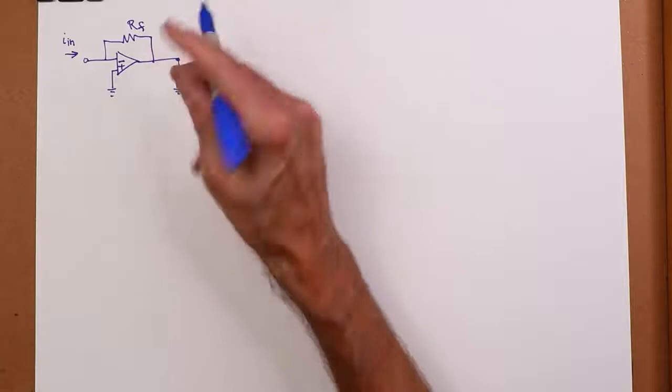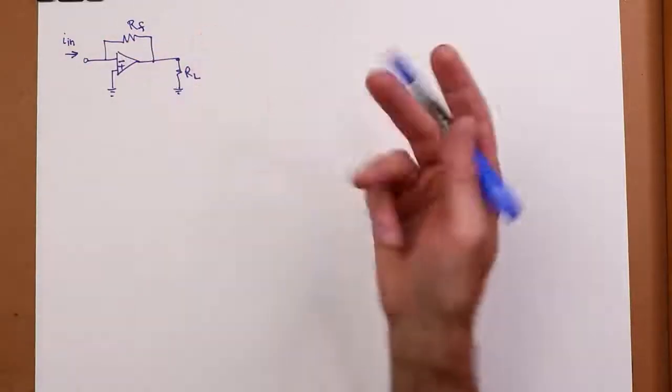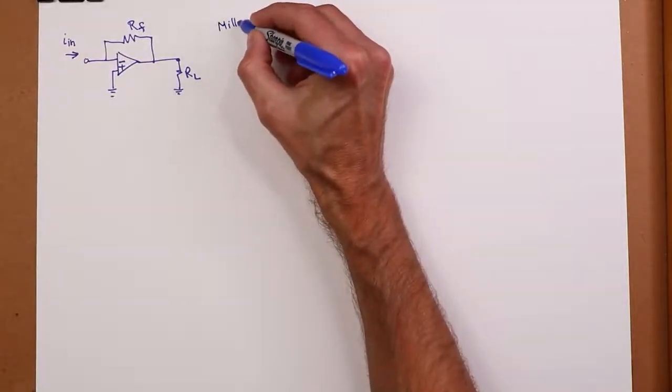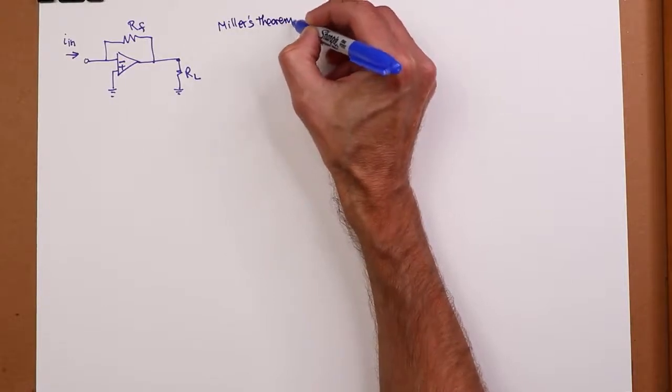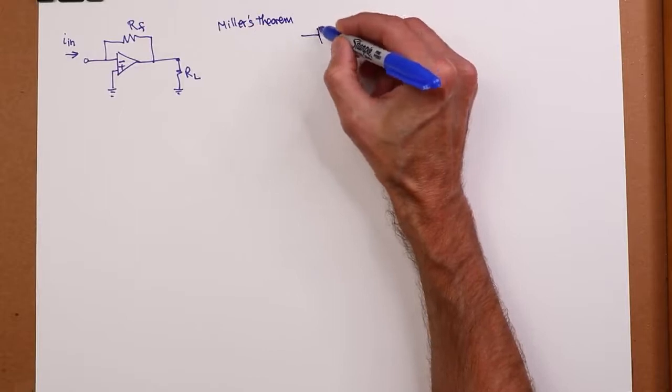Output, same deal, right? Output current RF or RL. Another way of looking at this is through Miller's theorem. All right, so Miller's theorem basically says you can take an impedance that bridges an inverting amplifier, something like this.